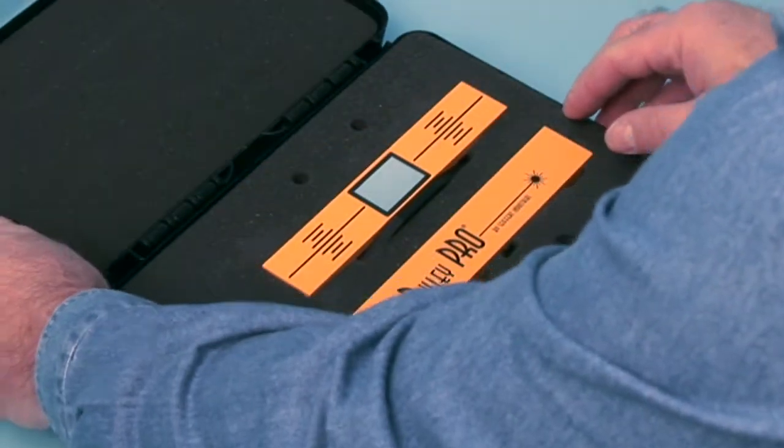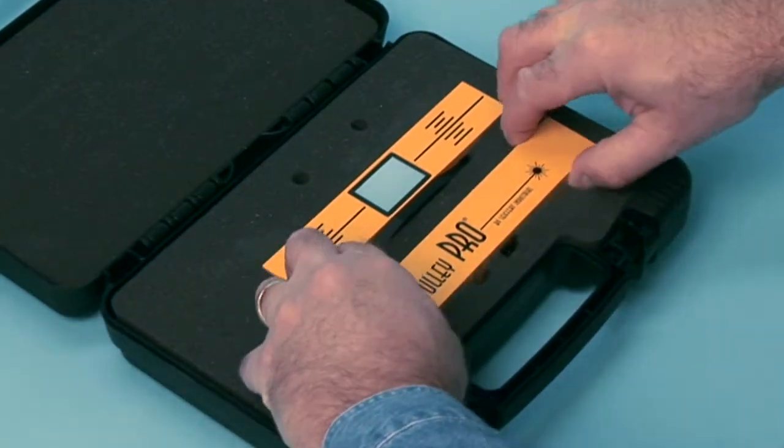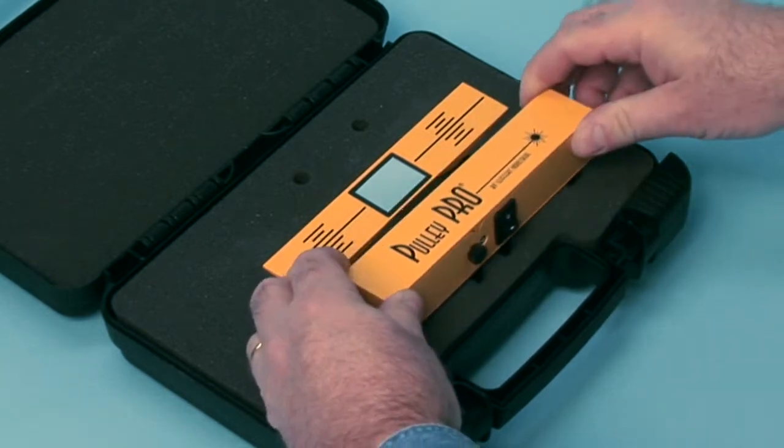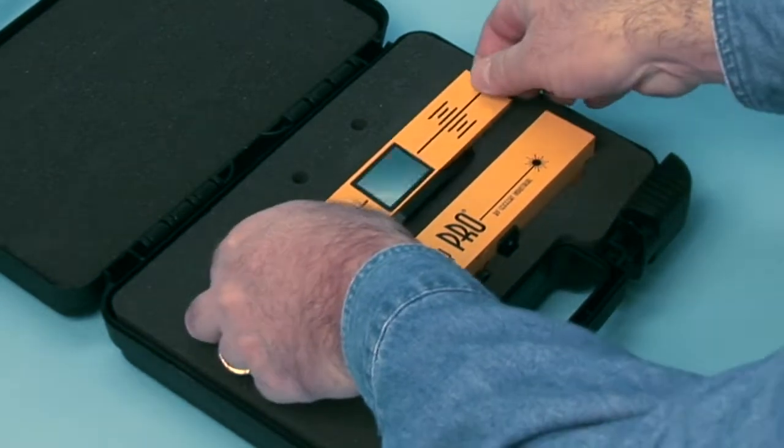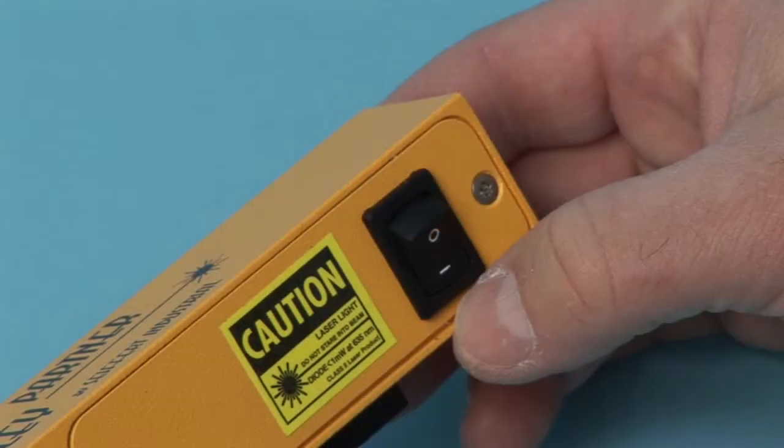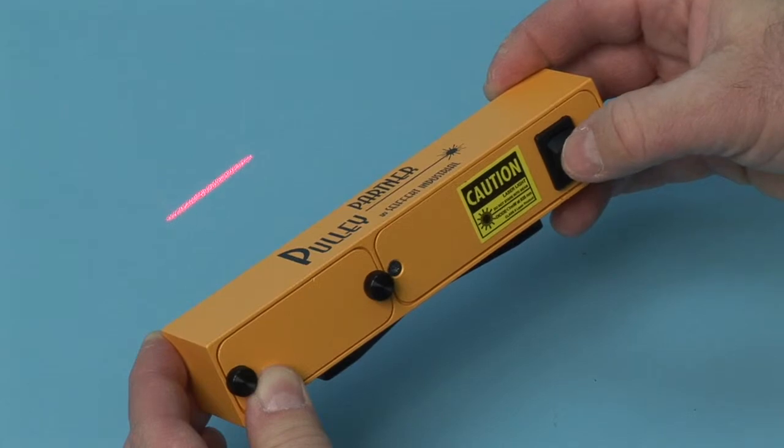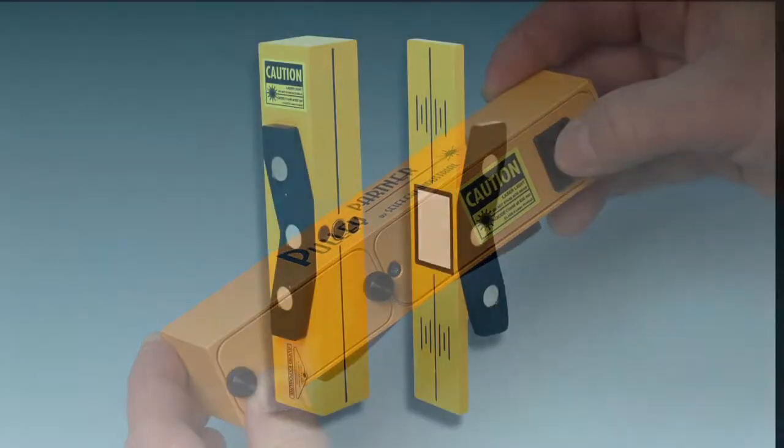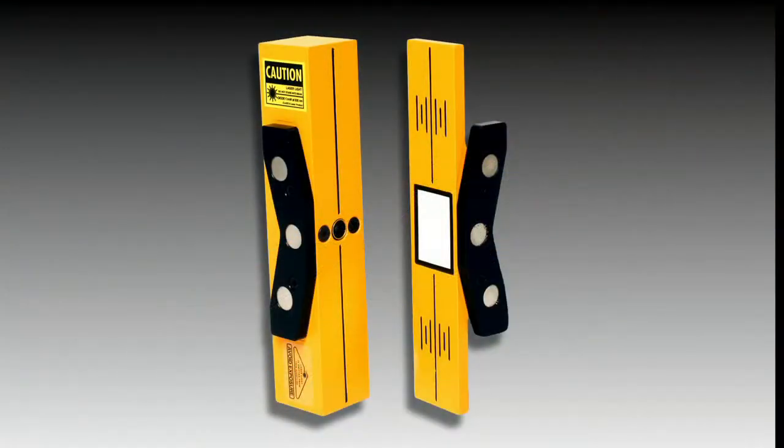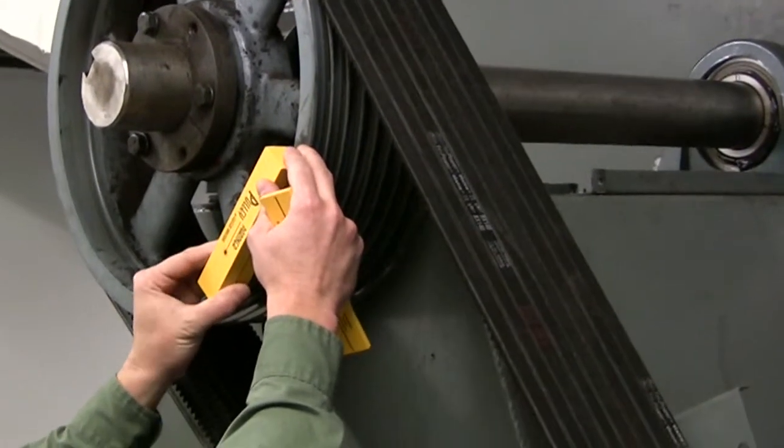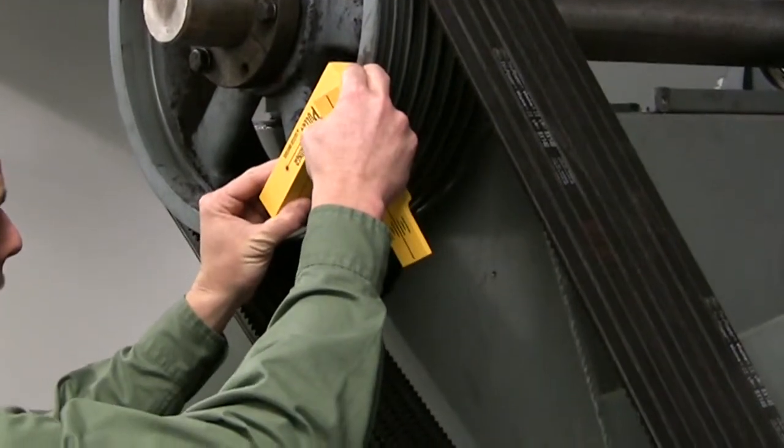Open the Pulley Pro or Pulley Partner carrying case and remove the two compact and durable units that compose the alignment system: the laser transmitter and the reflector. Turn on the laser by switching the laser unit on using the rocker switch located on the back of the transmitter. The Pulley Pro and Pulley Partner are equipped with a powerful magnet bracket assembly, allowing the operator to mount the system on almost any pulley size, quick, fast, and easy.